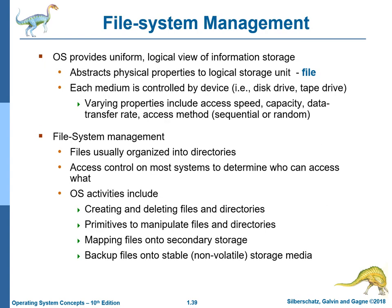File system management: the operating system provides a uniform logical view of information storage. It abstracts physical properties through a logical storage unit called a file. Each medium is controlled by a device like a disk drive or tape drive. Variant properties include access speed, capacity, data transfer rate, and access method. Files are usually organized into directories. Access control on most systems determines who can access what. OS activities include creating and deleting files and directories, primitives to manipulate files and directories, mapping files onto secondary storage, and backing up files onto stable non-volatile storage media.